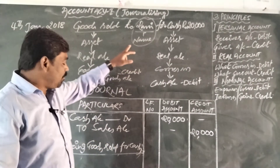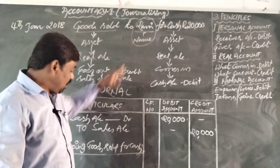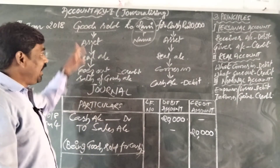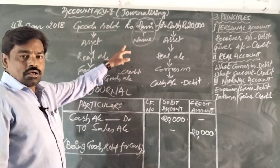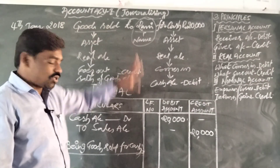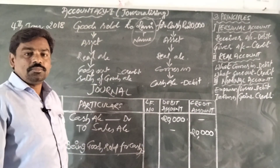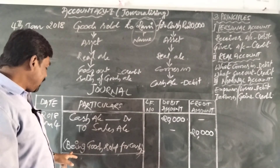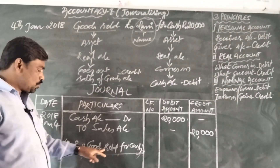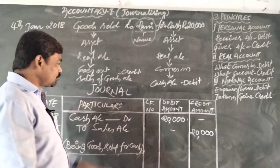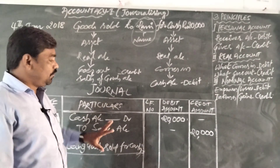In the narration also we do not give importance to the name of the person, because it is a cash transaction. We must not give importance to the name of the person when cash and another aspect are both present in the same accounting transaction. The narration is: 'Being goods sold for cash.'